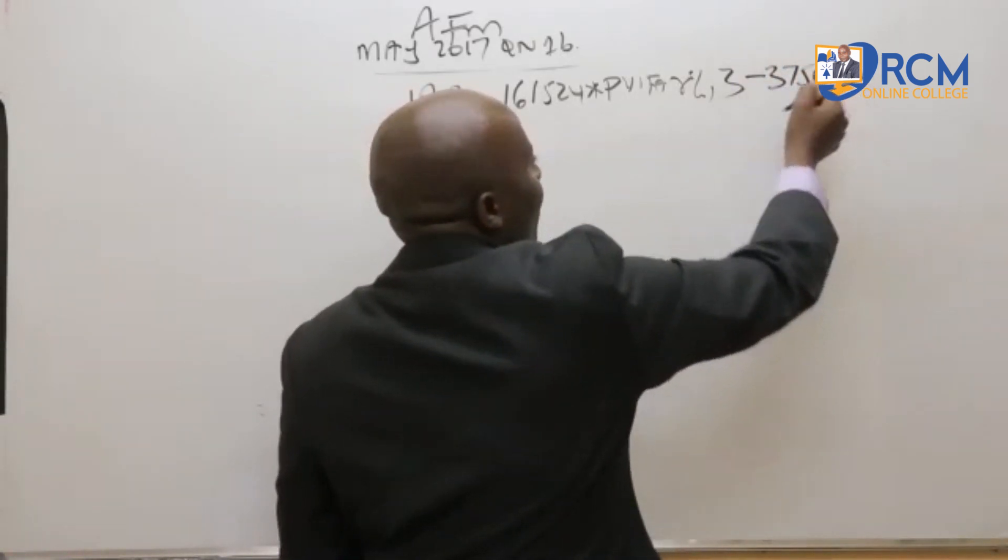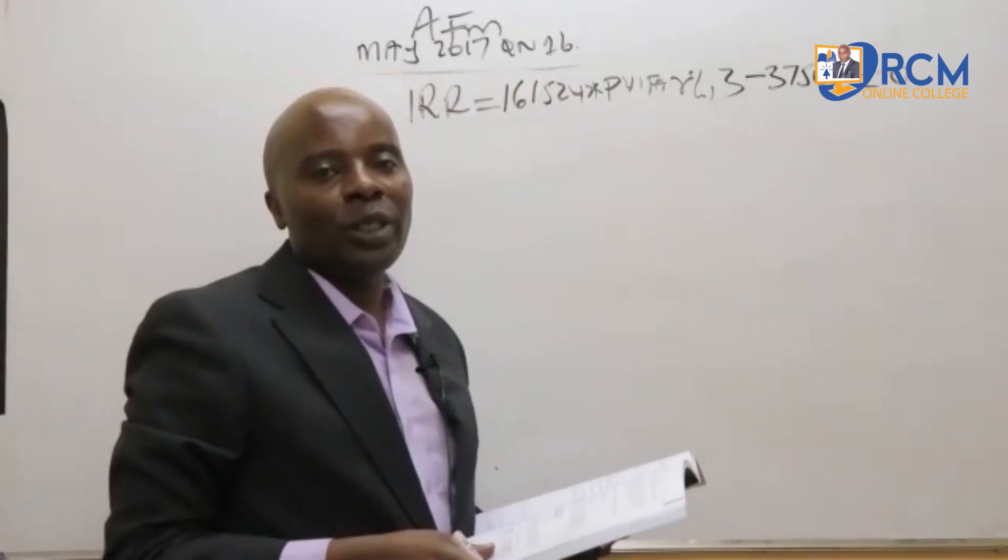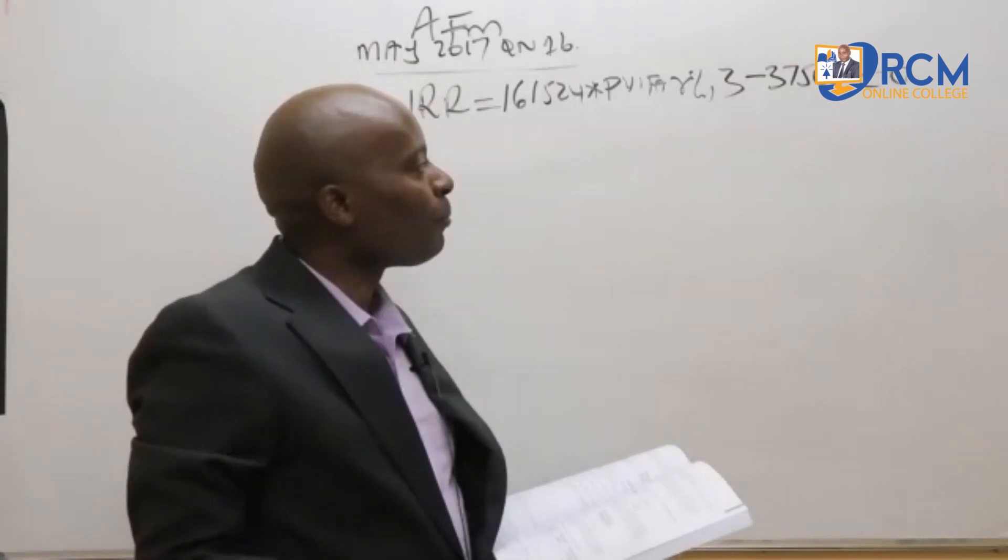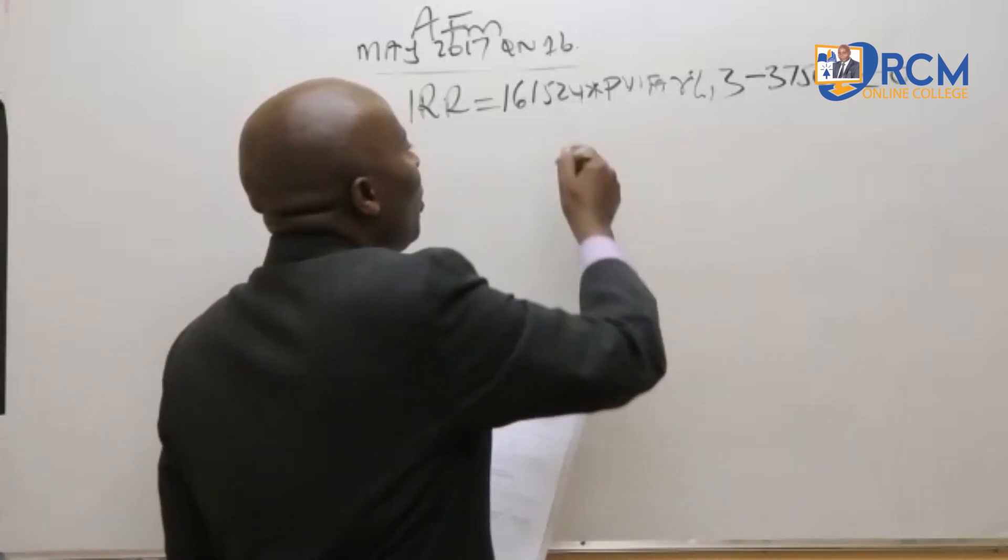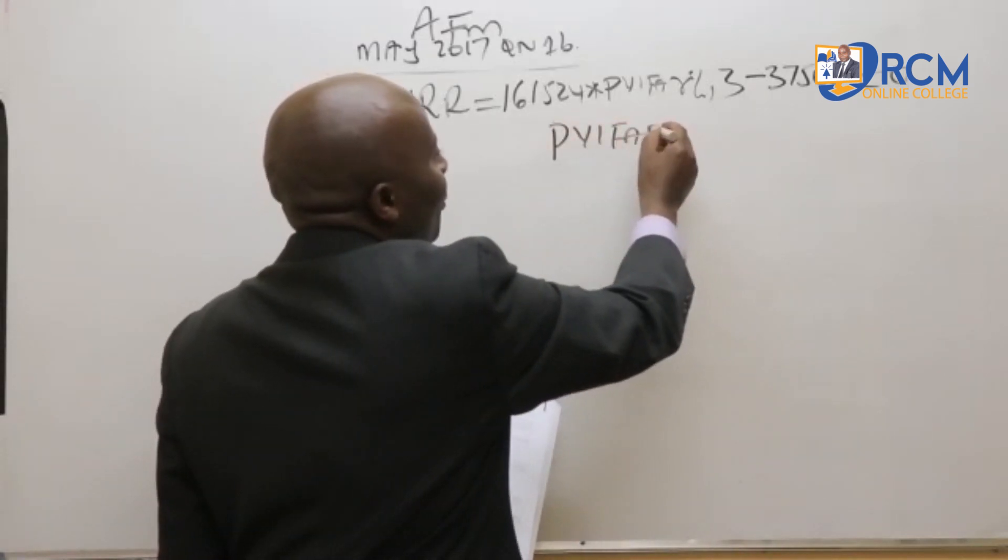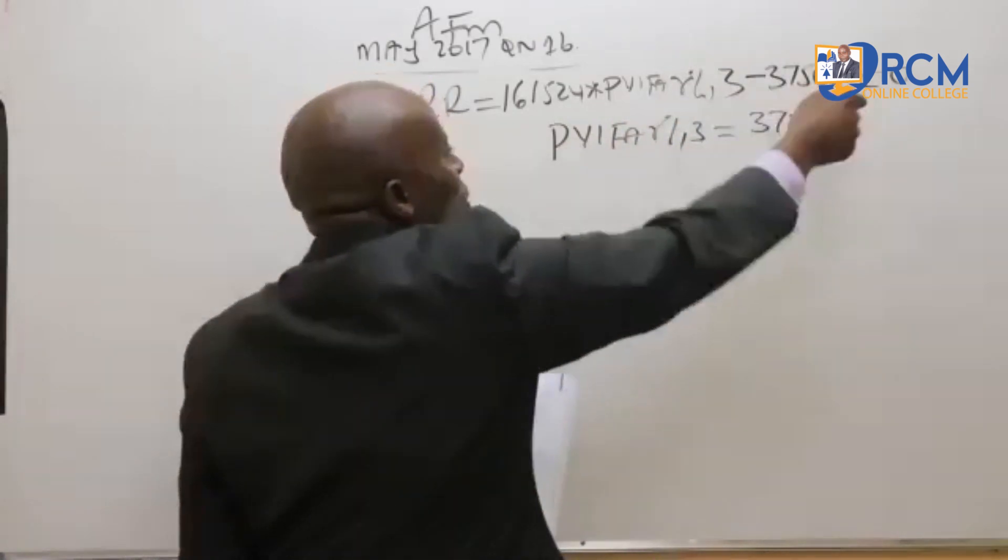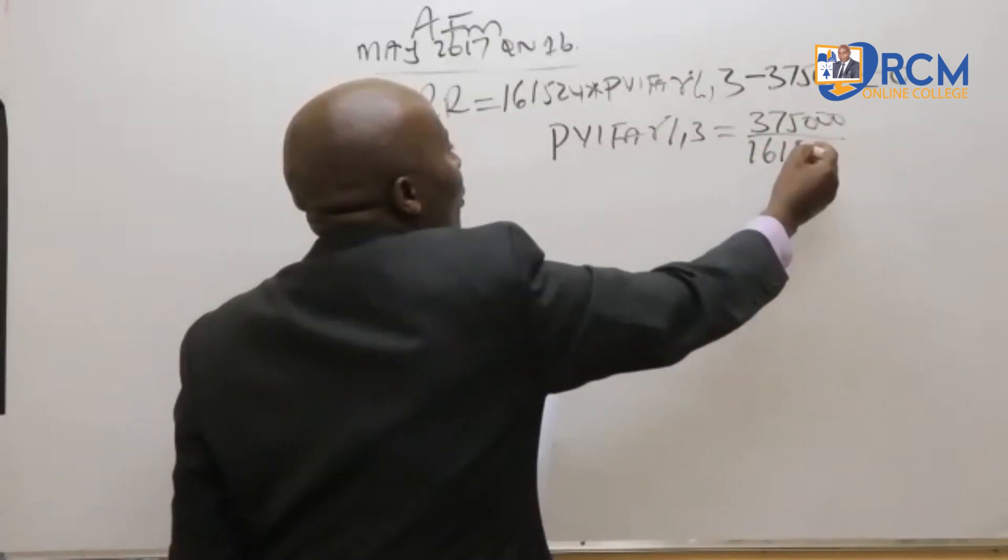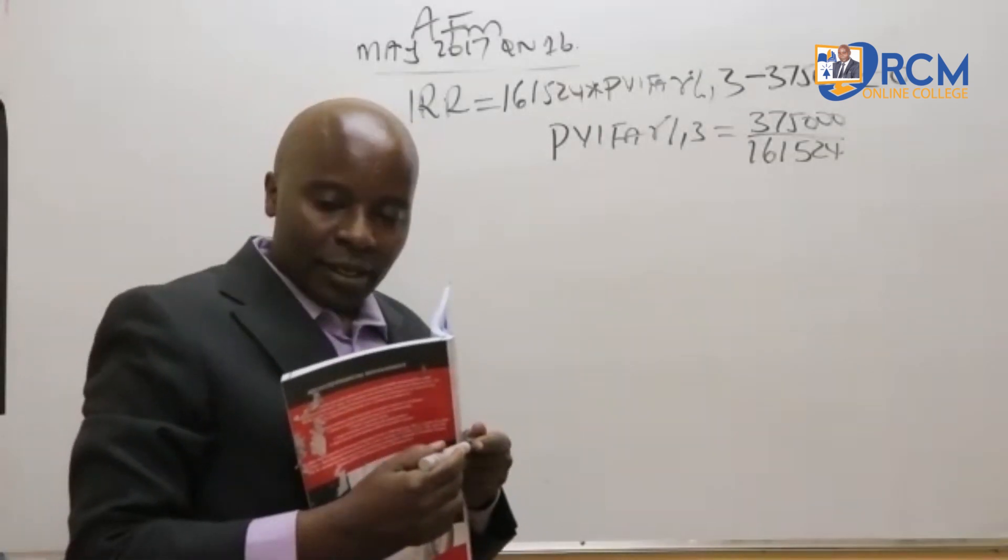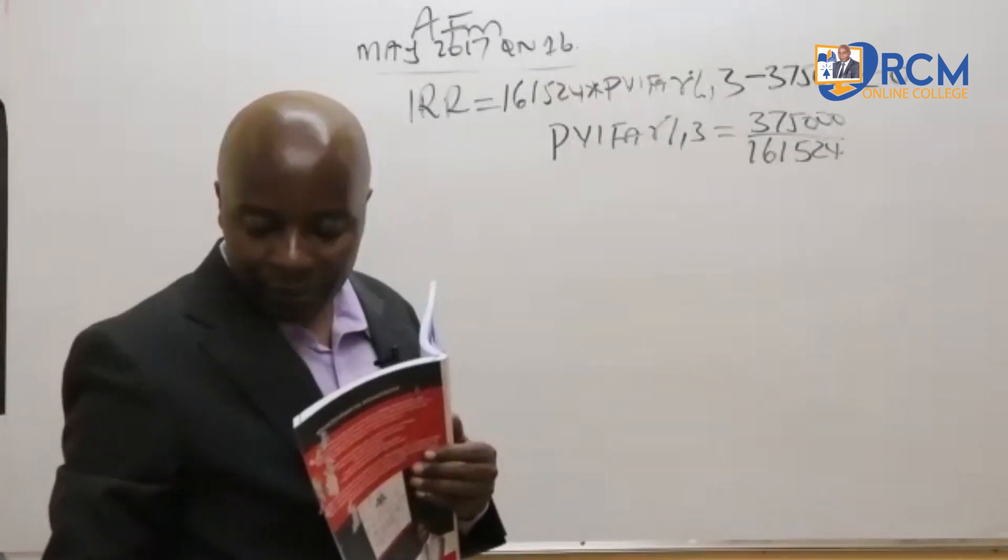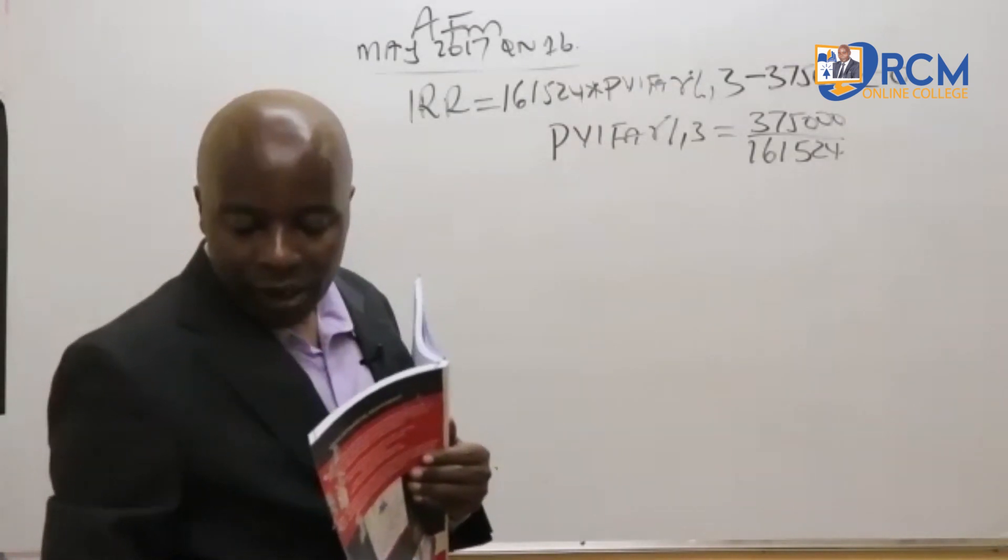So this is 375,000, and because they want me to give them IRR, what I'll do is to come and equate everything there to zero and then make PVIFA the subject of the formula. If I do that, I will end up getting PVIFA r percent three years equals 375,000 divided by 161,524. So 375,000 over 161,524 then gentlemen is supposed to be equal to what? Gentlemen, help me out here.